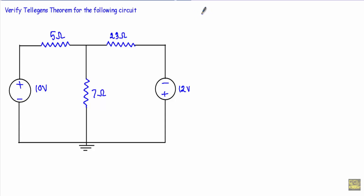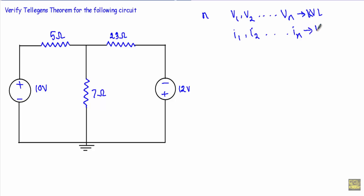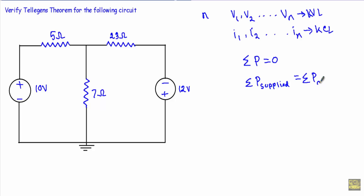First you have to know what Tellegen's theorem is. Tellegen's theorem states that if we have n elements in a circuit, and the instantaneous voltages across those elements are v1, v2, up to vn satisfying KVL, and the instantaneous currents through those elements are i1, i2, up to in satisfying Kirchhoff's current law, then the algebraic sum of the instantaneous power at any instant in the circuit will be equal to zero. From this we can deduce that the sum of supplied power will be equal to the sum of absorbed power.